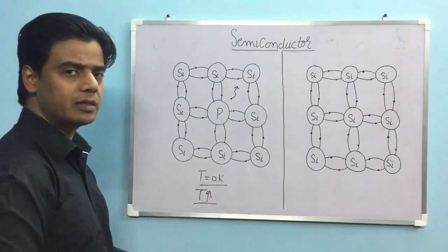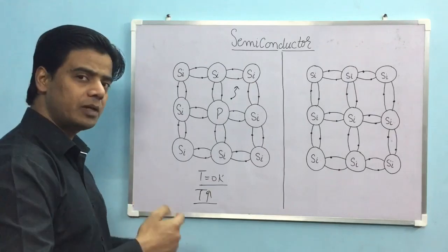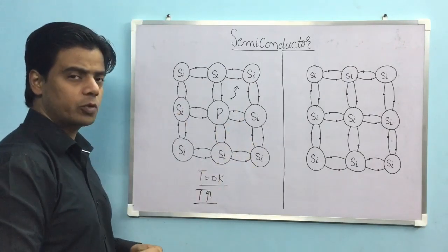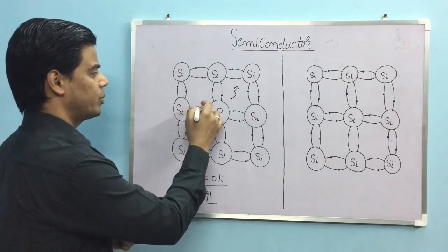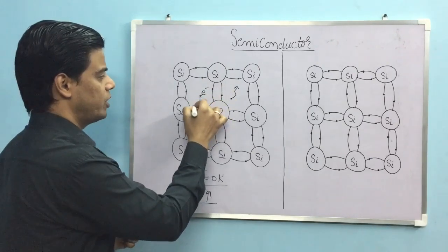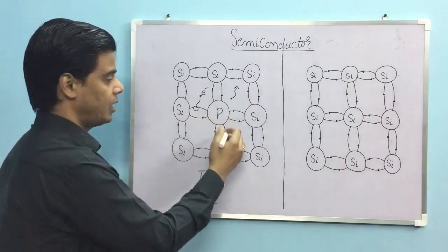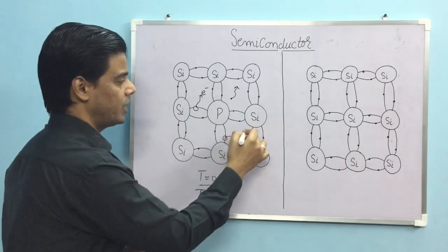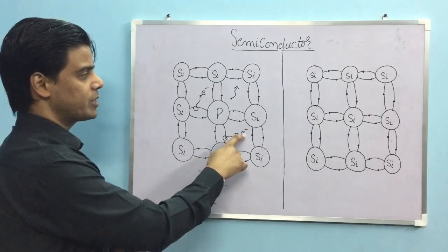This electron will be able to conduct electricity. So this electron went out, and after it left, a vacancy was created. Once electrons have enough energy, they will go away. Now we can see how many free electrons there are.